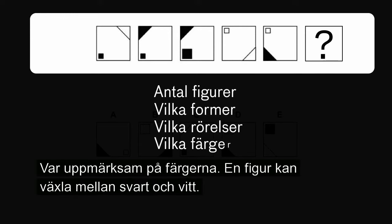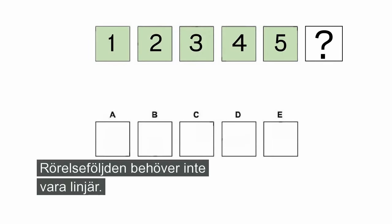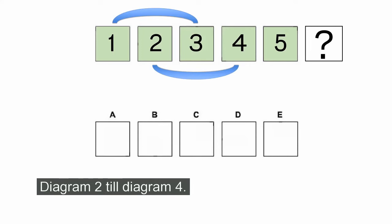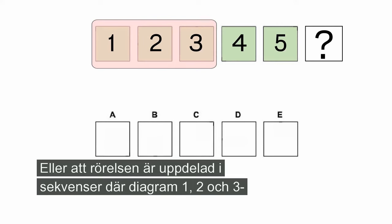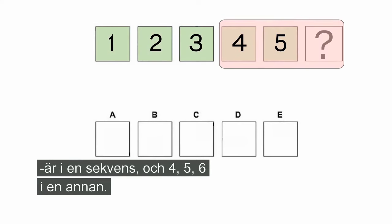Var uppmärksam på färgerna — en figur kan växla färg mellan svart och vit. Tänk också på att en svart figur kan dölja en vit om de hamnar på varandra i en rörelse. Rörelseföljden behöver inte heller vara linjär. Det kan vara så att diagram ett är länkat till diagram tre, diagram två till diagram fyra, eller att rörelsen är uppdelad i sekvenser.